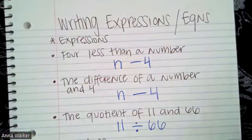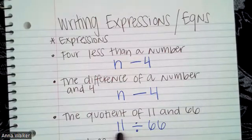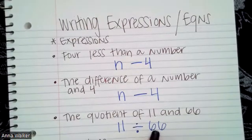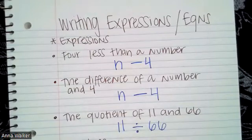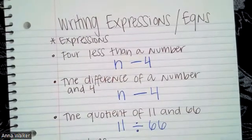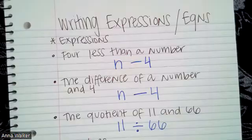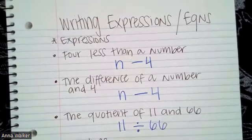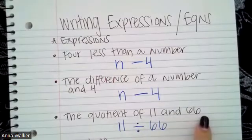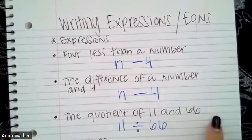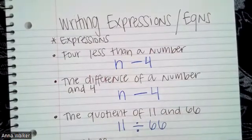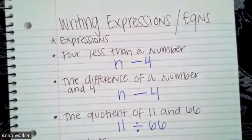So the quotient of 11 and 66, it means 11 divided by 66. Now, if they said 66 divided by 11 in words, we would write it as the opposite, right? 66 divided by 11. Or if they said 66 split into 11 groups, that would be 66 divided by 11. But because they're saying the quotient of 11 and 66, we're going to follow the order that they write it in in English. So 11 divided by 66. Okay.